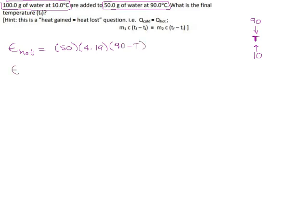And then for the cold water, it's going to absorb energy, and that energy is MC delta T also. The mass of the cold water is 100 grams. Its specific heat is 4.19. And its temperature change, it's starting at 10 and going up to T, so T minus 10 should do it for the temperature change.